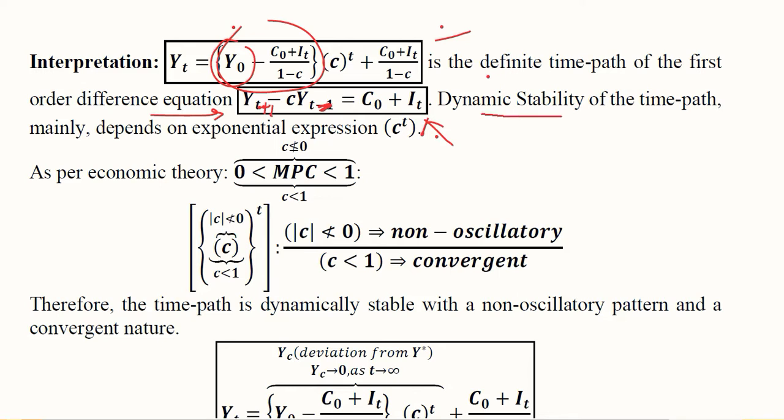Now we should examine dynamic stability. This depends on c, which here represents the marginal propensity to consume (MPC). It is this MPC, or small c, that we are focusing on.